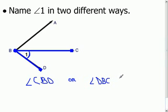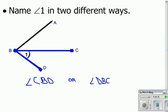Okay, and again, we have to use three letters because if I said just angle B, I wouldn't know if you were referring to the top angle, the bottom angle, or the whole diagram completely. So again, when there's multiple angles formed at the same vertex, you need to name the angle using three letters.